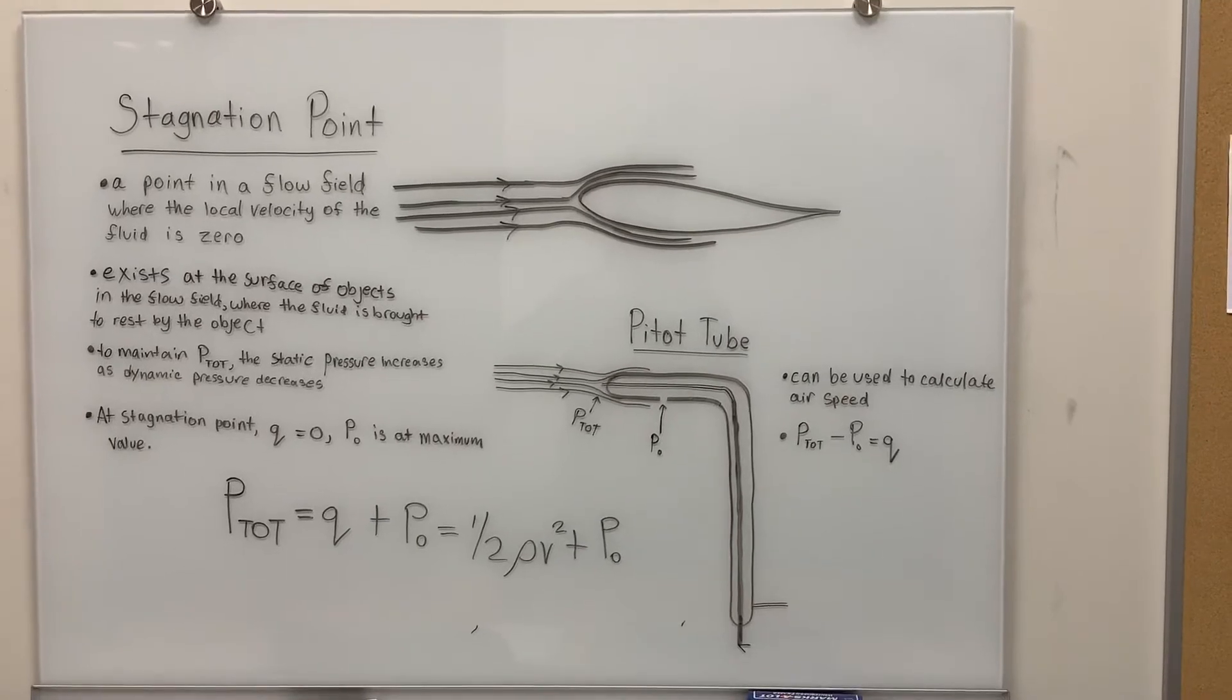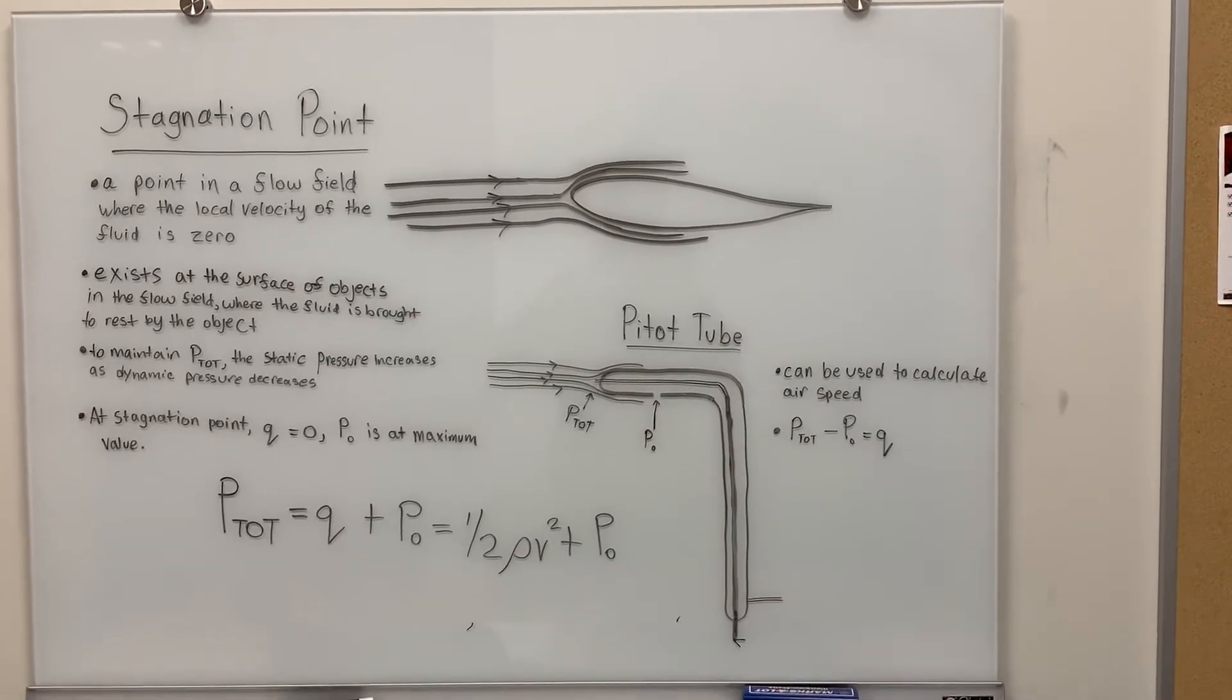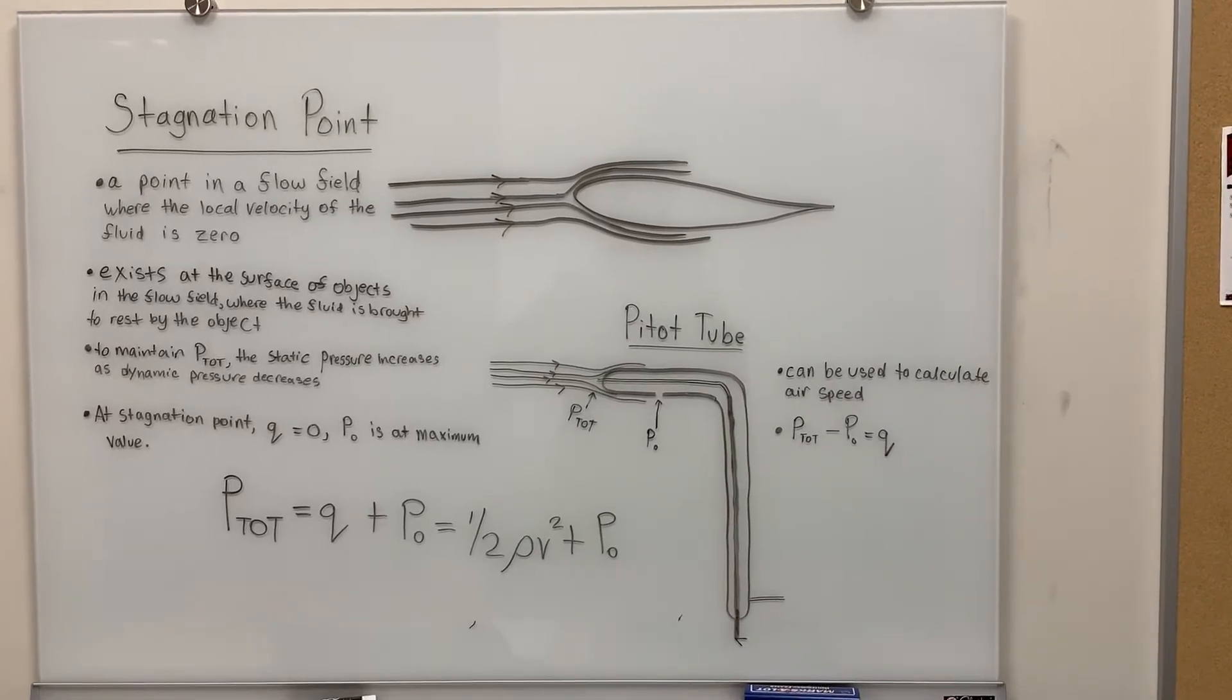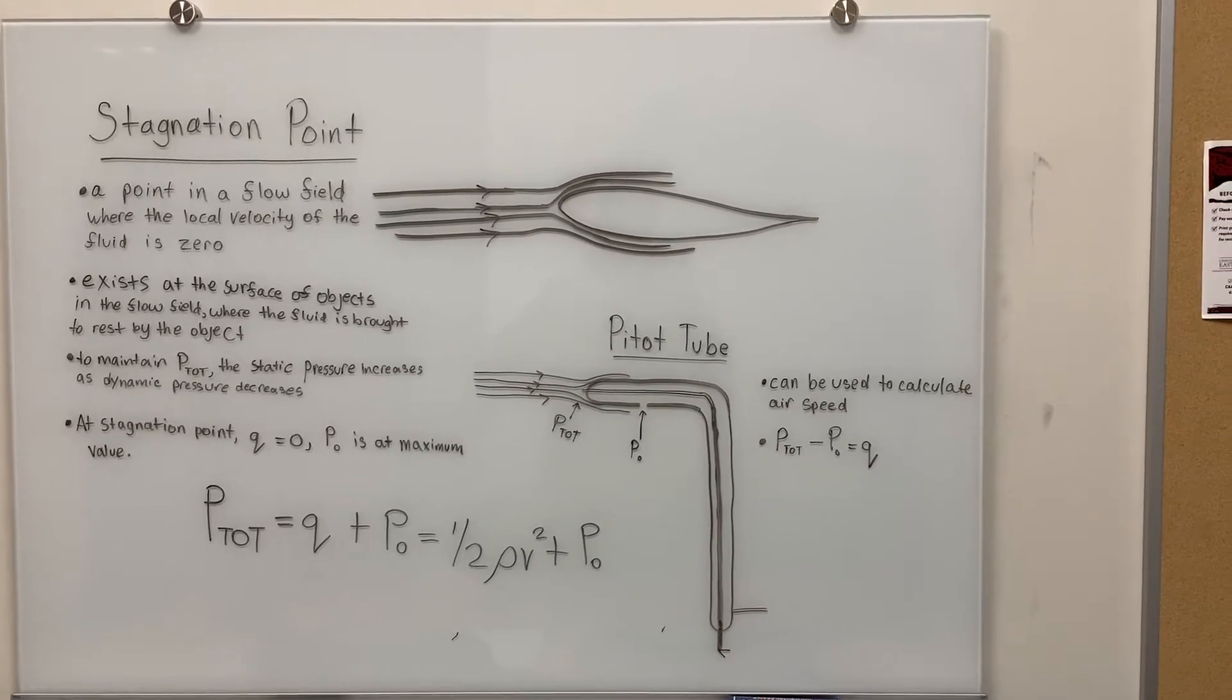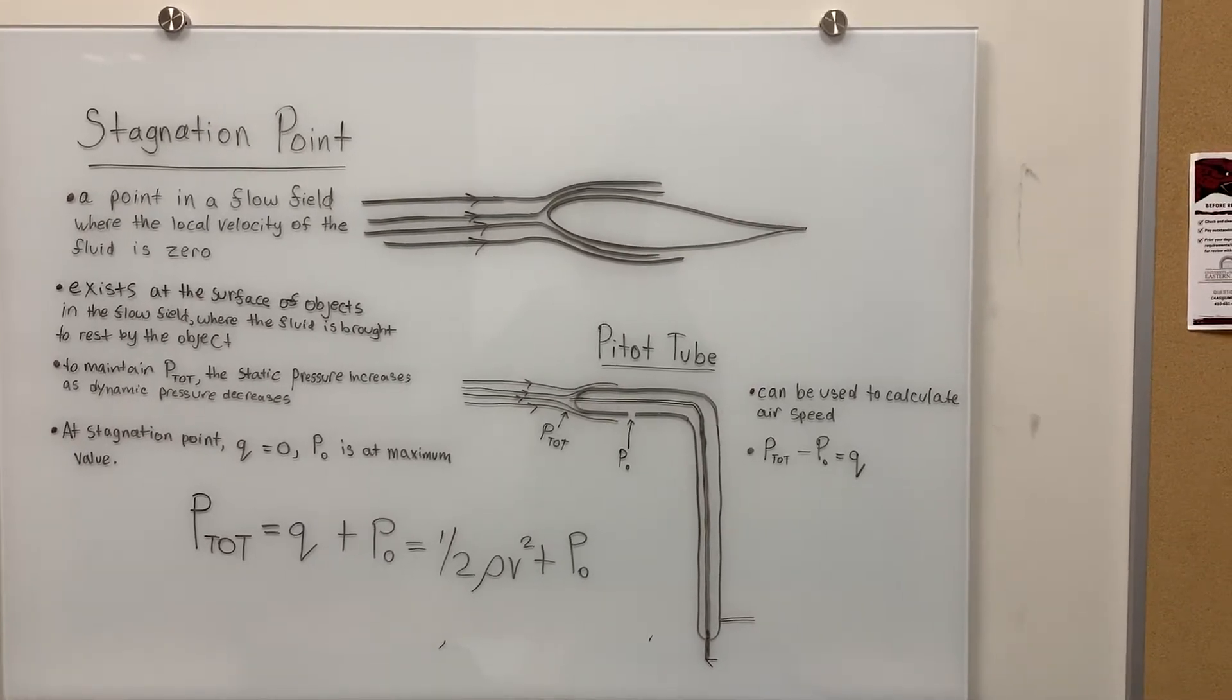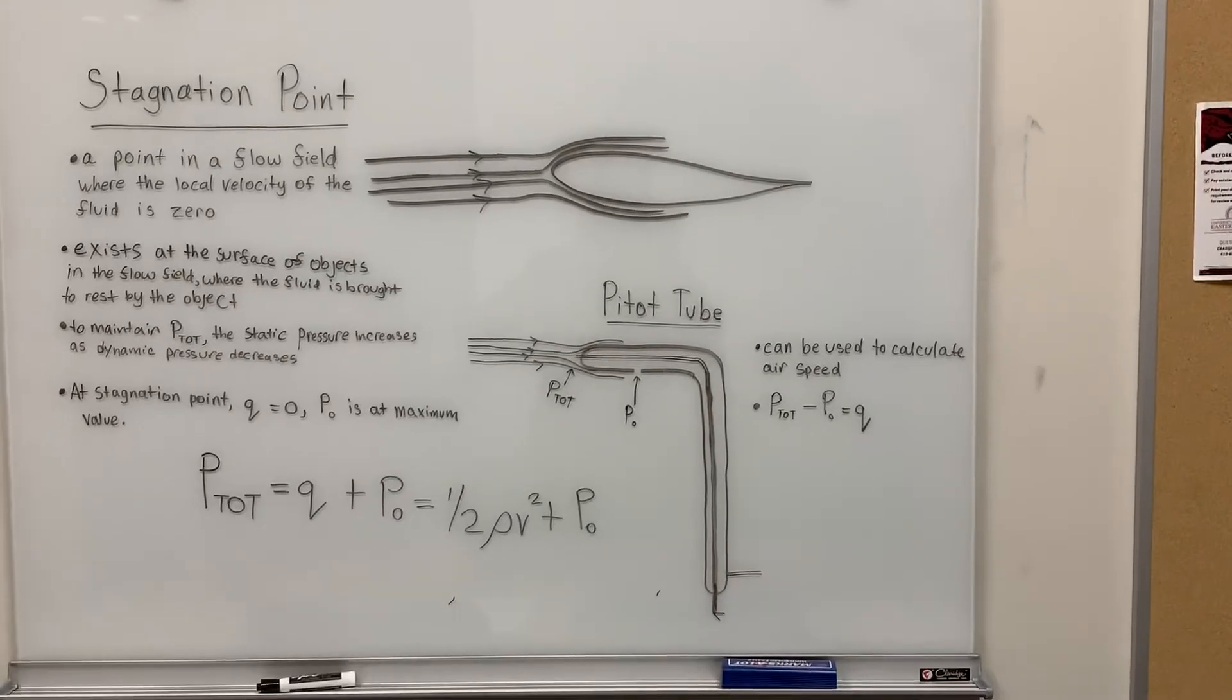The second hole is on the underside of the pitot tube. It is open to the environment and records the static pressure. The static pressure is the pressure on the container wall.